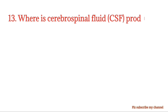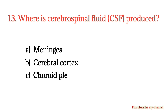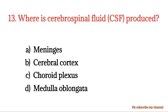MCQ number 13. Where is cerebrospinal fluid produced? Option A: Meninges. Option B: Cerebral cortex. Option C: Choroid plexus. Option D: Medulla oblongata. The right option is Option C.